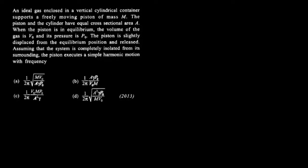An ideal gas enclosed in a vertical cylindrical container supports a freely moving piston of mass m. The piston and the cylinder have equal cross-sectional area. When the piston is at equilibrium, the volume of the gas is V0 and its pressure is P0.